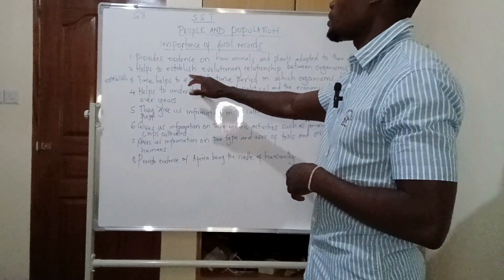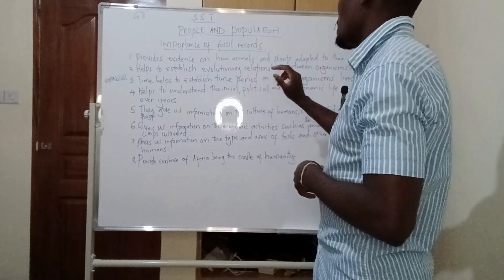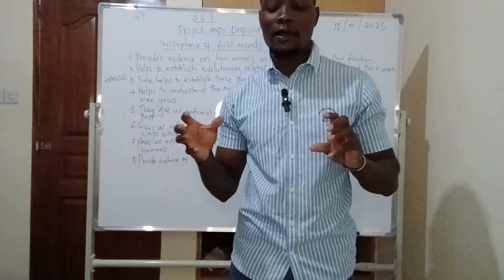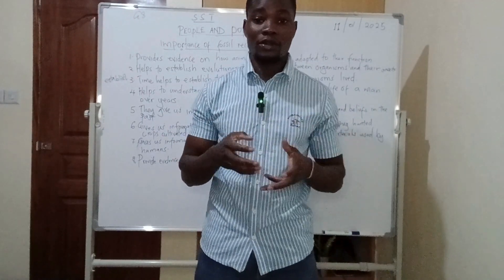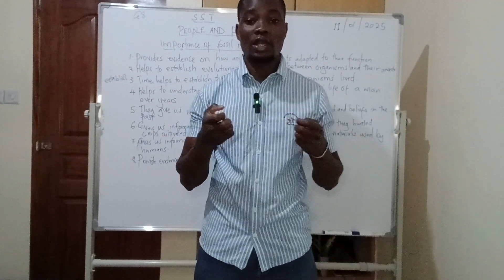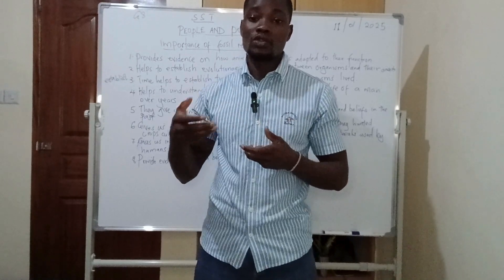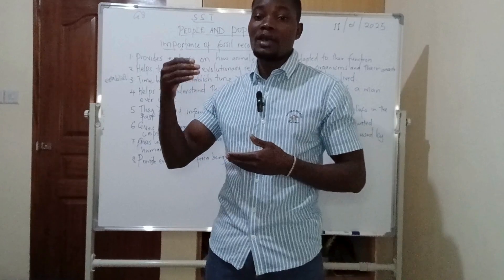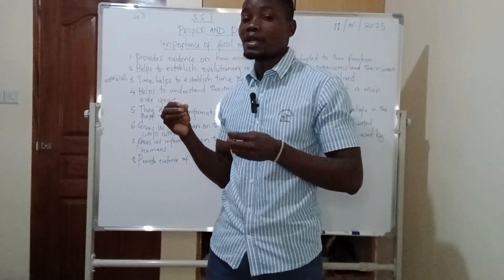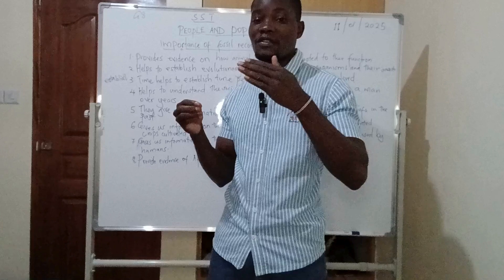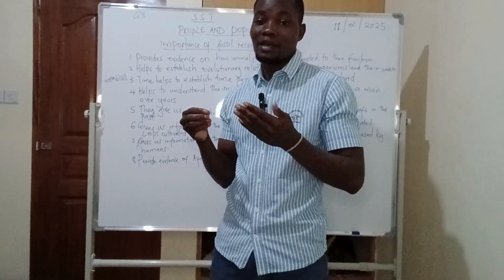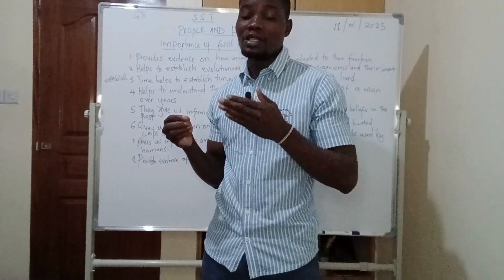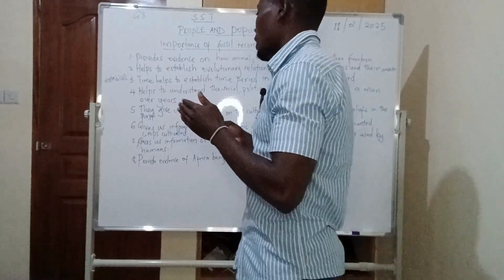Number two, fossil records help to establish evolutionary relationships between organisms and their ancestors. When you are studying a particular organism, you will be able to know through fossil records that this organism evolved from a certain ancestor. You'll be able to see features that an organism's ancestor had, which the organism may or may not have now.